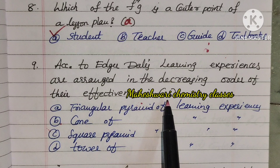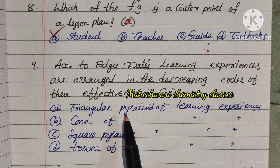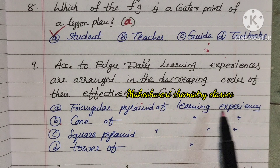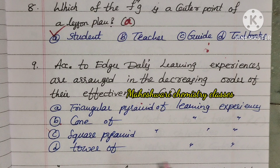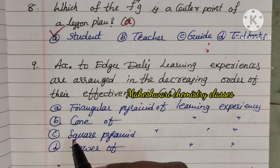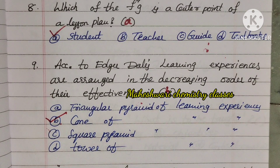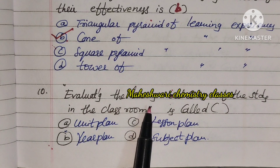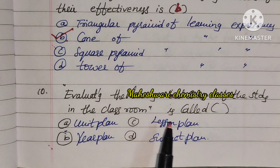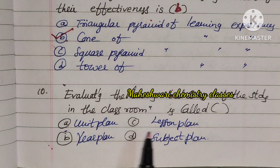Next question: According to Edgar Dale, learning experiences are arranged in decreasing order of their effectiveness. The shape of this is — Cone, Square pyramid, or Tower? Option B is right — it is a triangular pyramid (cone of experience).